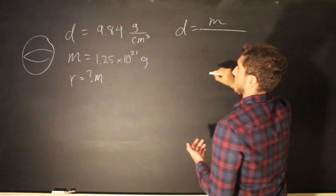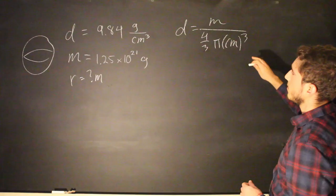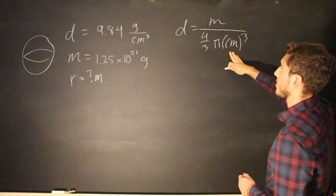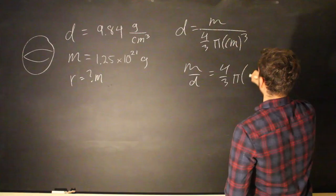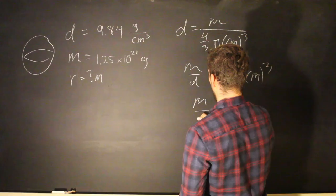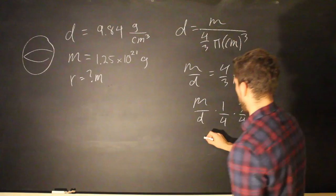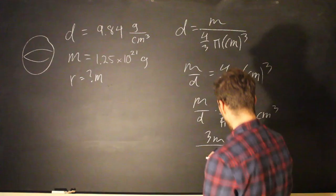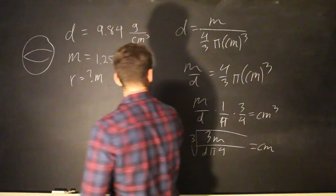Since this is a spherical body, it is the volume of the sphere, which is 4/3 pi r cubed. So, we have D, we have M, and we're looking for r. So, we're just going to do a little manipulation. So, M over D is equal to 4/3 pi r cubed, and M over D times 1 over pi times 3/4 equals r cubed. And so, the cube root of 3M over 4 pi D equals r.